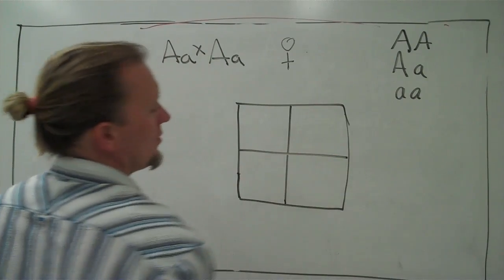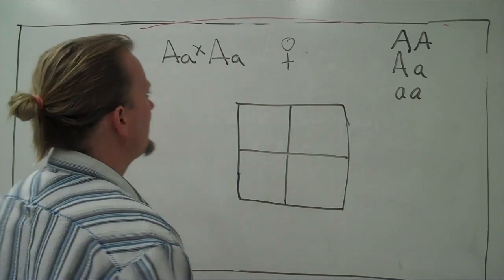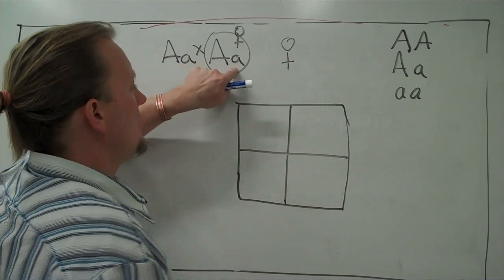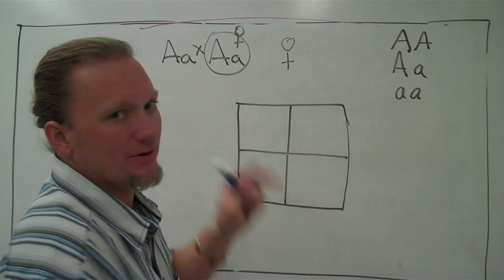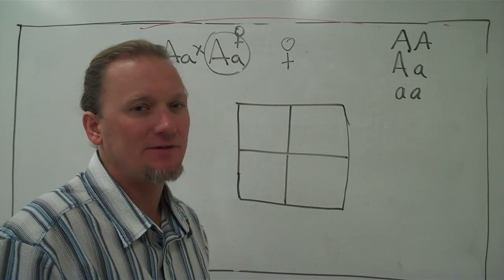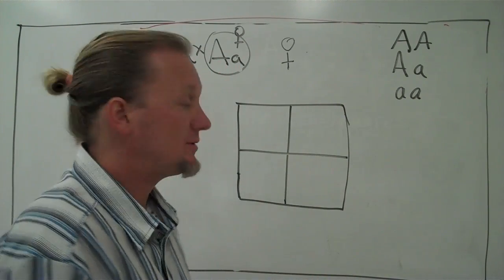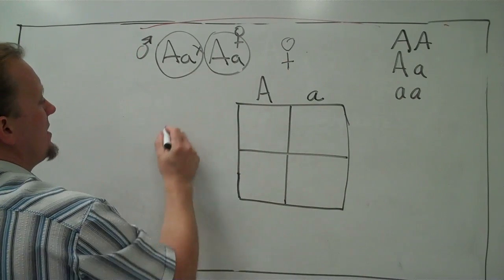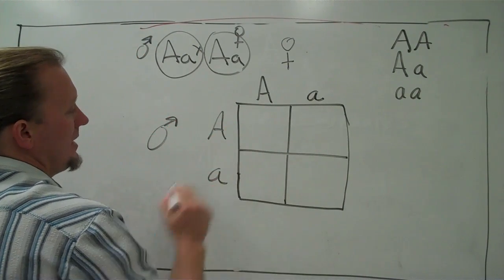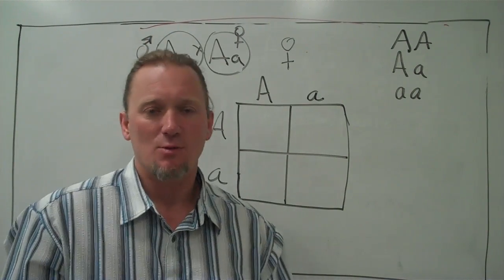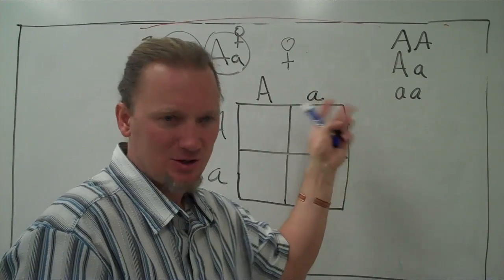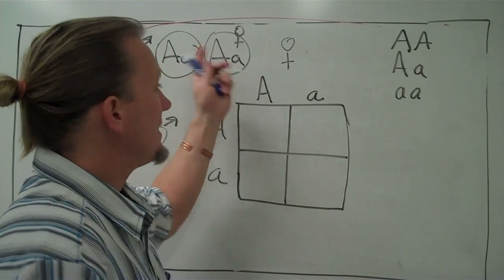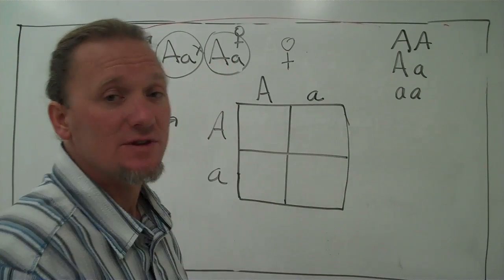I'm going to make a four-square box. If the female is big A little a, she can give one of these two alleles. Because she has exactly the same number of each, she can give them with equal probability — there's a 50% chance she'll give big A and a 50% chance she'll give little a. No telling which one. So let's put big A here and little a here.